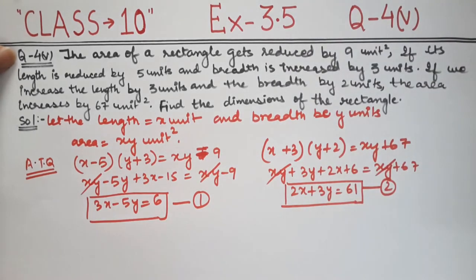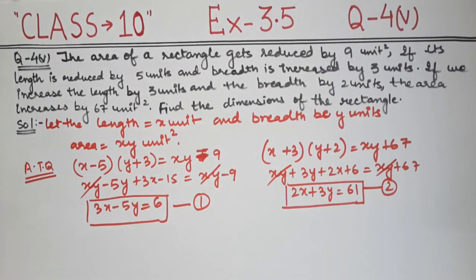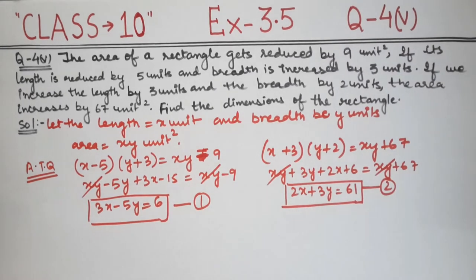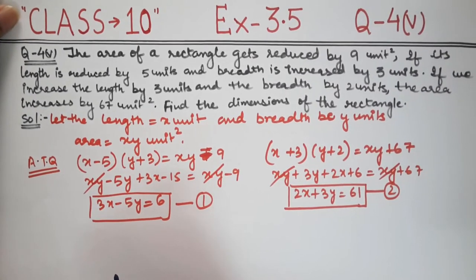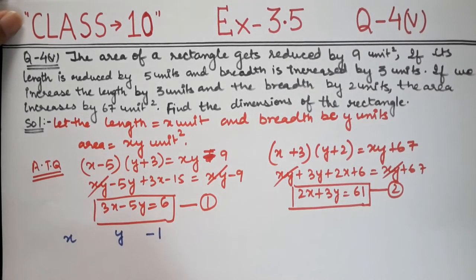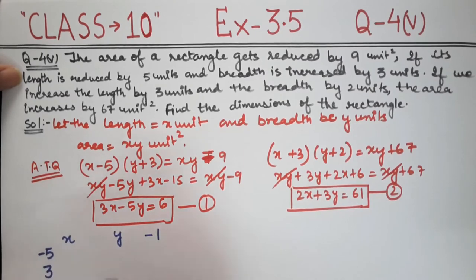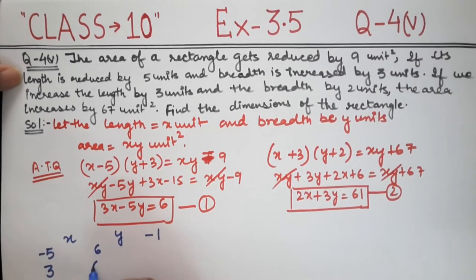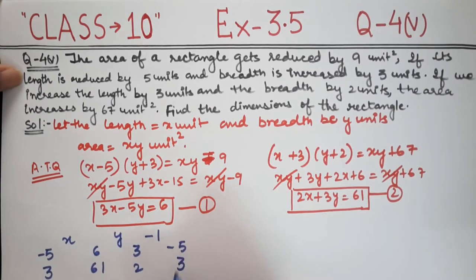Now we will solve this using the cross multiplication method. This exercise is specifically for cross multiplication. We write x over 1 and minus 1 in the standard format. We write the coefficient of y first: minus 5 and 3, then the constant terms: 6 and 61, then the coefficients of x: 3 and 2, and again the coefficients of y.